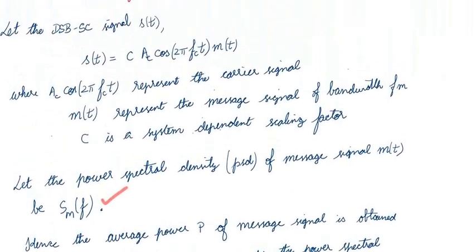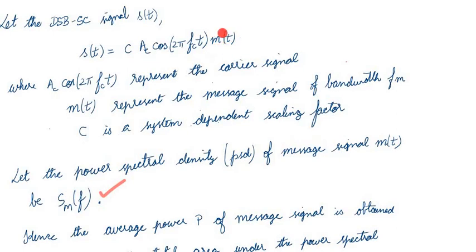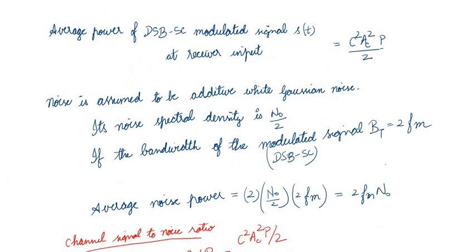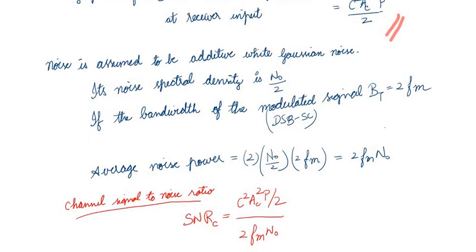We have computed P, the power of the message signal. Looking at the expression for s(t), since the power of m(t) is P, the total power of the DSB-SC signal is c²Ac²P/2 — multiplying the power of the message signal with the power of the carrier. We assume the noise is white Gaussian noise with spectral density N₀/2. The bandwidth of the DSB-SC signal is 2fm, so the average noise power is 2fm·N₀.